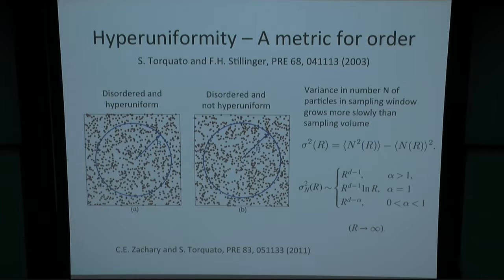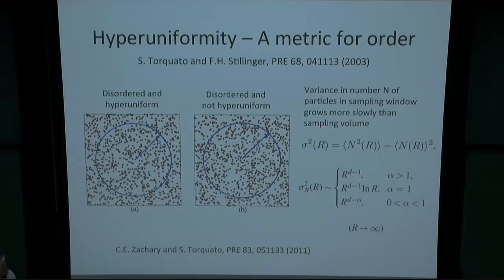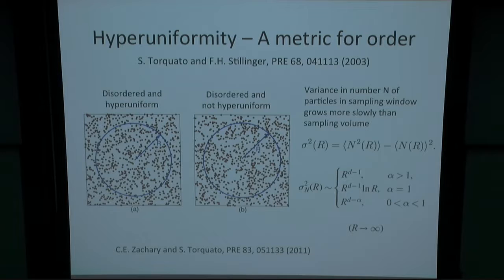If you have a collection of points in space, and you take a volume of that space — for simplicity consider a d-dimensional sphere — and then you center that at some point in your system and count how many particles are on the surface of this sphere, then you move the sphere to a new location and repeat that a bunch of times, you're looking at the variance in the number of particles on the surface of this sphere for spheres of different size radii. A hyperuniform system is one in which the variance in the number of particles on the edge of the sampling window grows more slowly than the volume of the sampling region. They have these expressions depending on the value of alpha, which is a measure of short-range order.